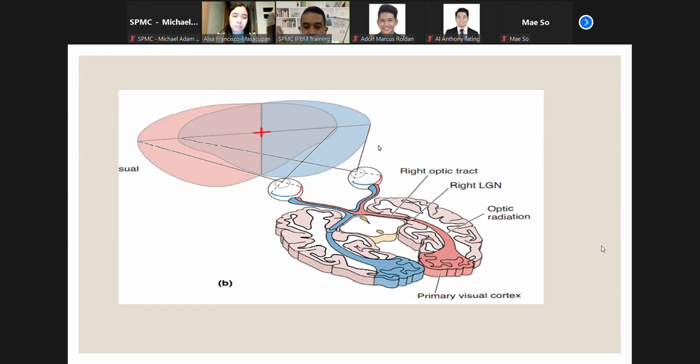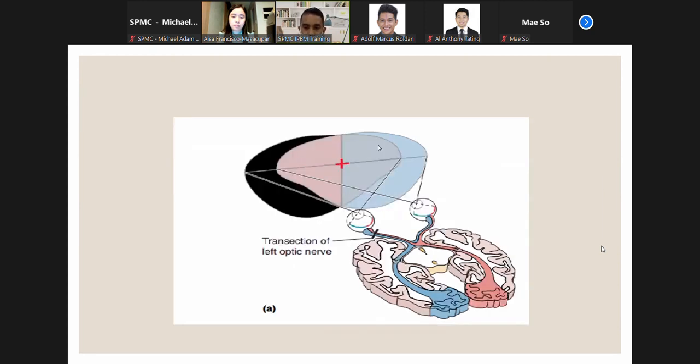Lesions anywhere in the retinofugal projection from the eye to the visual cortex in humans can cause blindness in part or all of the visual field. Therefore, we know that it is this pathway that mediates conscious visual perception. Our knowledge of how the visual world is represented in the retinofugal projection helps us predict the types of perceptual deficits that will result from its destruction at different levels.